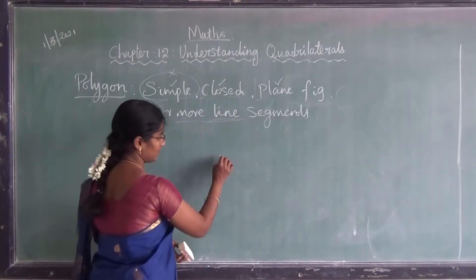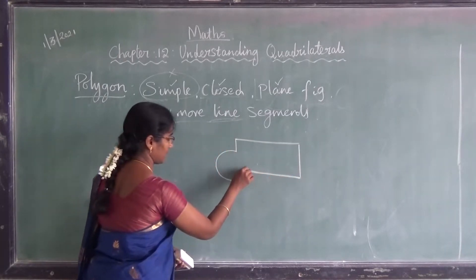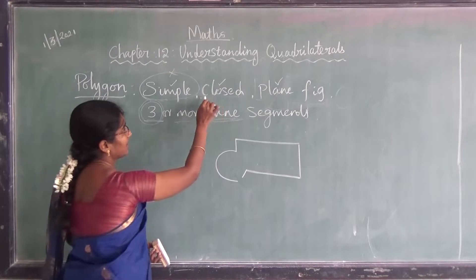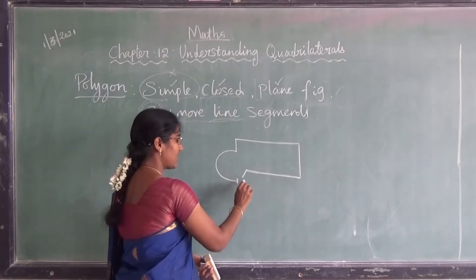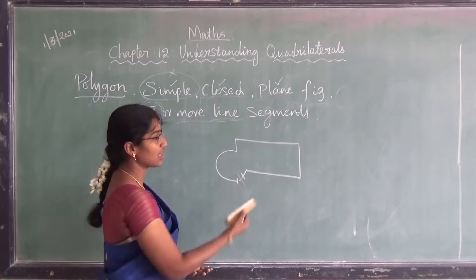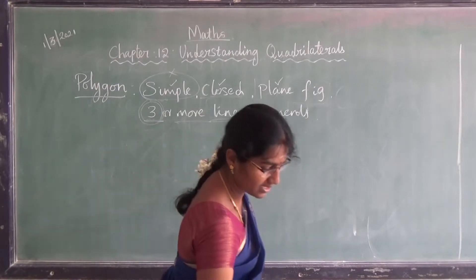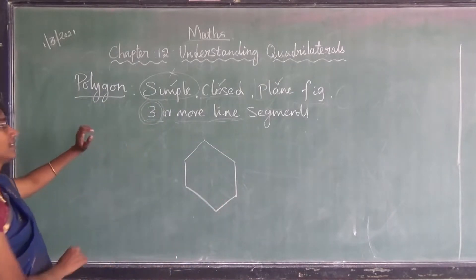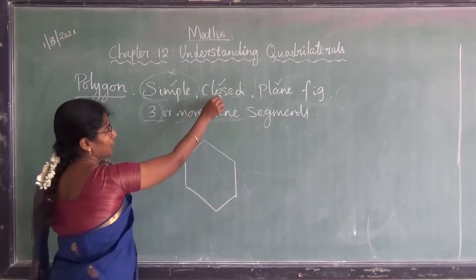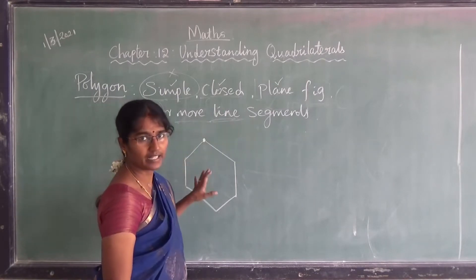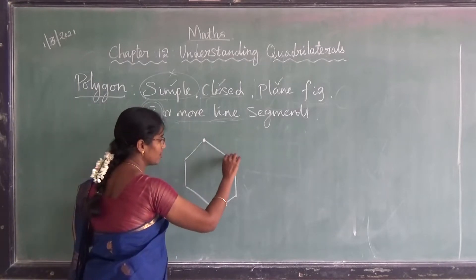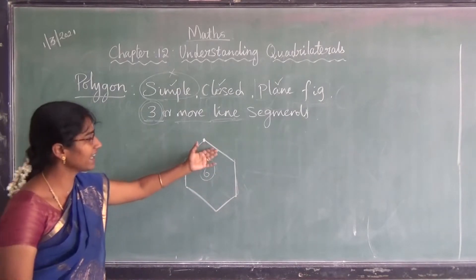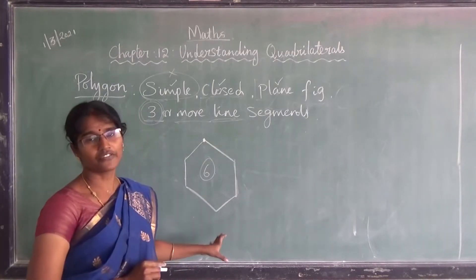Can I say this is a polygon? It is simple because it doesn't cross any other line segments. But is it a closed figure? No — because this is the starting point and this is the ending point; it doesn't close. So it is not a polygon. Now, can I say this is a polygon? It is simple, closed, plane figure, and uses six line segments — six is greater than three — and all are straight lines. So of course, this is a polygon.